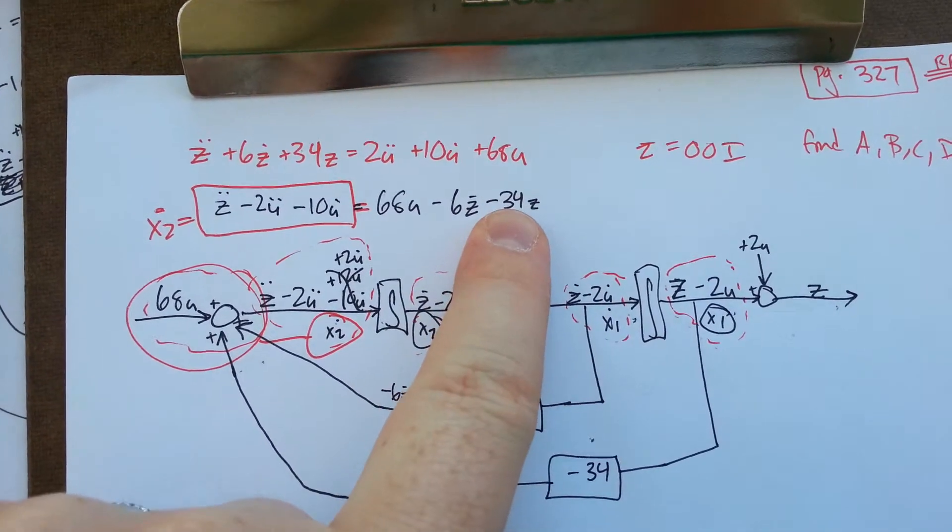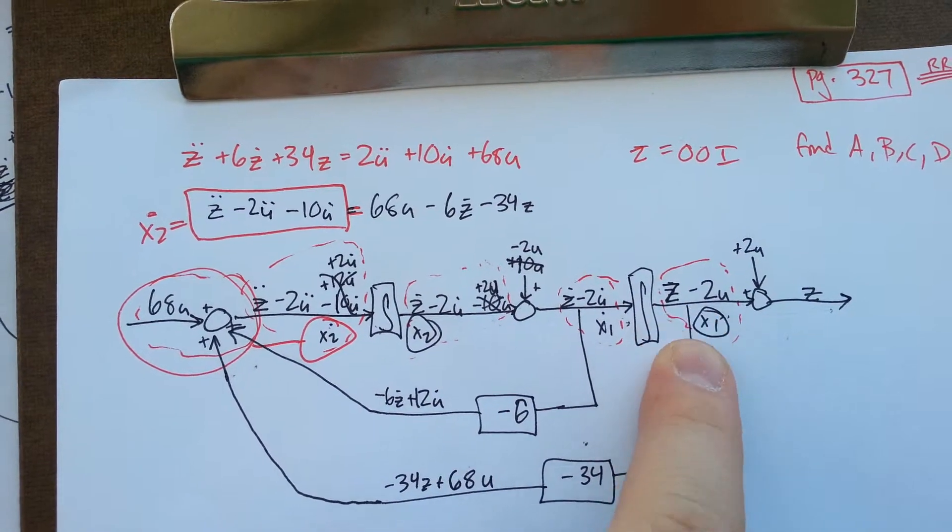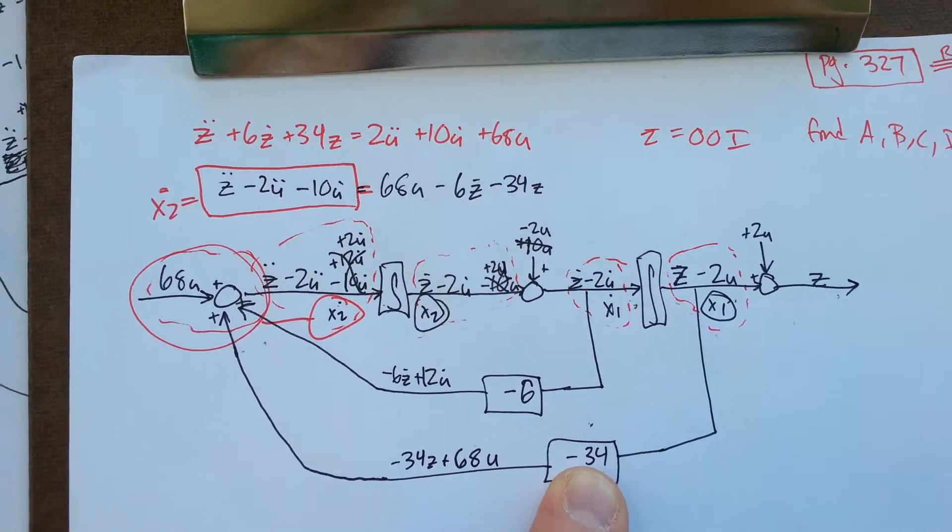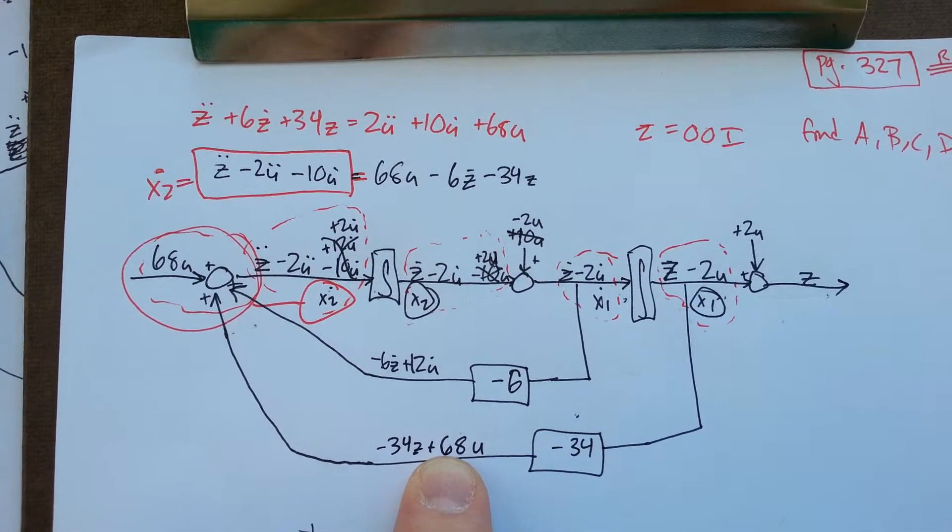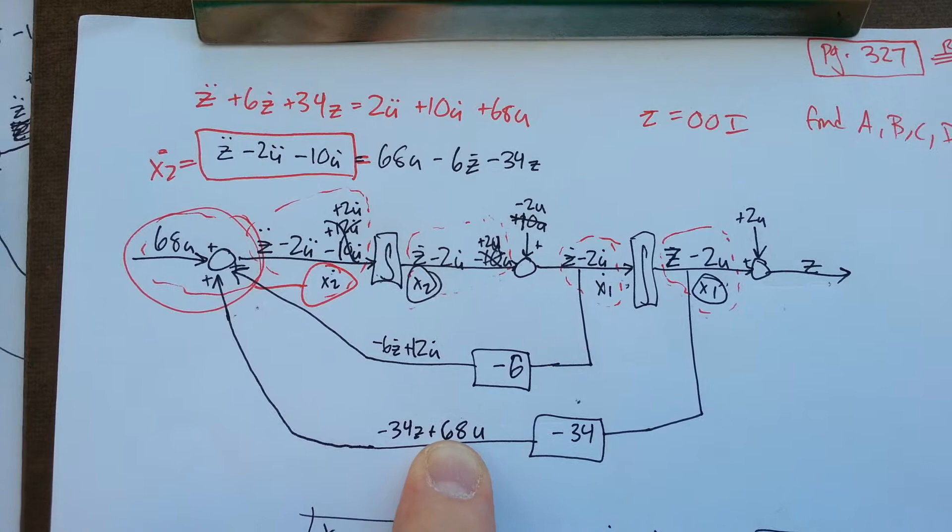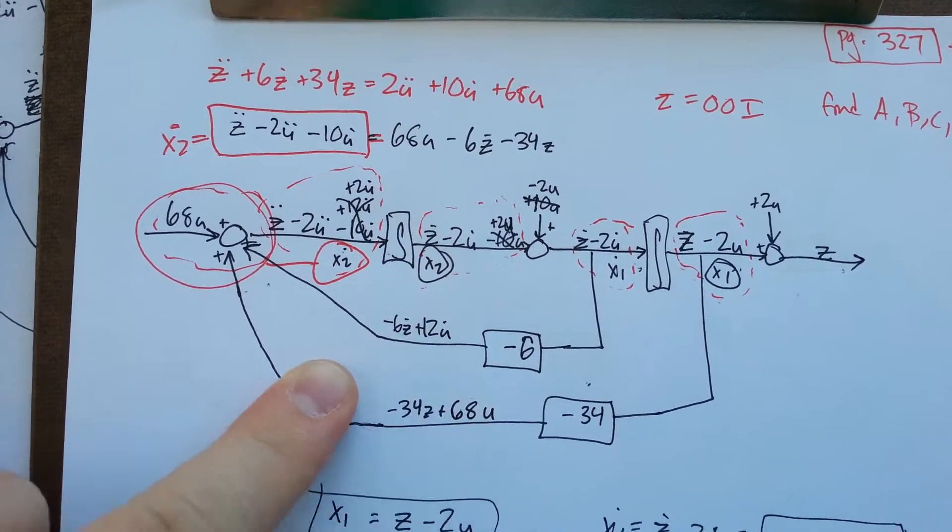I need a 34z. There's a z there, so I pull it down, negative 34 multiplier, but that also puts a 68u in there. But since it's just in terms of u, I don't have to worry myself about it.